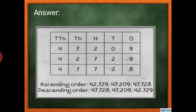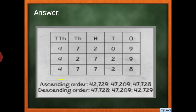Here is the answer with all three numbers written out according to their places. In ascending order: 42,729 is the smallest, then 47,209, and the biggest is 47,728. We compare the ten-thousands digits first — they are the same — so we move to the thousands place: 2 is smaller than 7, making 42,729 the smallest. The remaining two are equal at thousands, so we compare hundreds: 2 versus 7, confirming 47,209 is smaller than 47,728.